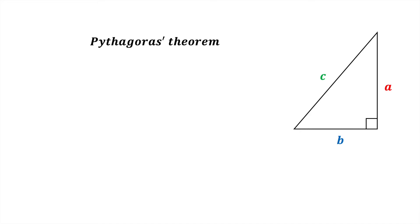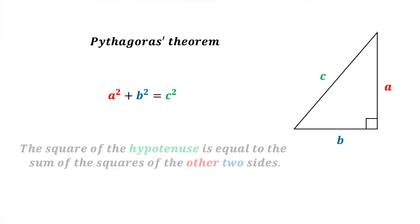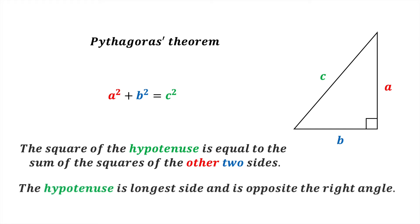First, let's review Pythagoras' theorem. We begin with a right-angled triangle with side lengths a, b and c. Pythagoras' theorem then states that a squared plus b squared equals c squared, or simply, the square of the hypotenuse is equal to the sum of the squares of the other two sides. The hypotenuse is the longest side and is opposite the right angle.